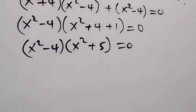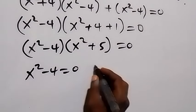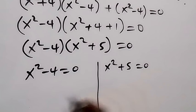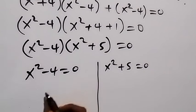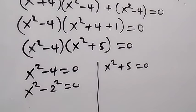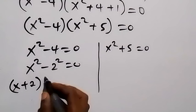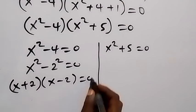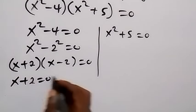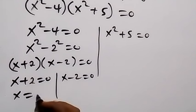We have two cases: x squared minus 4 equals zero, or x squared plus 5 equals zero. From the first case, we change 4 to 2 squared, giving x squared minus 2 squared equals zero. Applying difference of two squares: x plus 2 times x minus 2 equals zero, so x equals minus 2 or x equals 2.